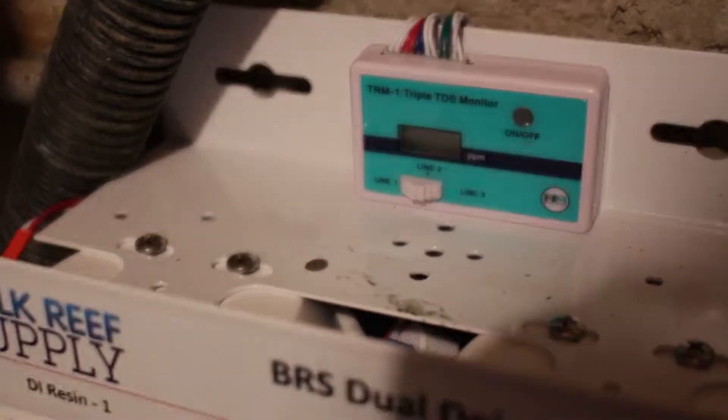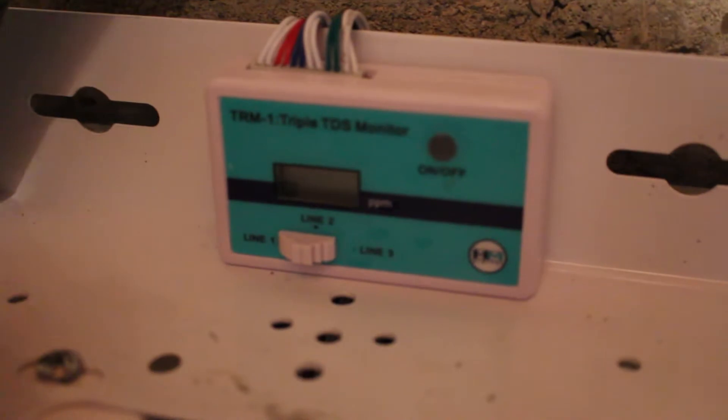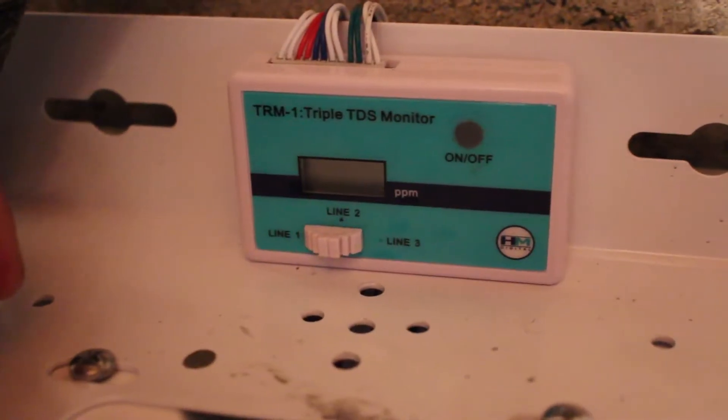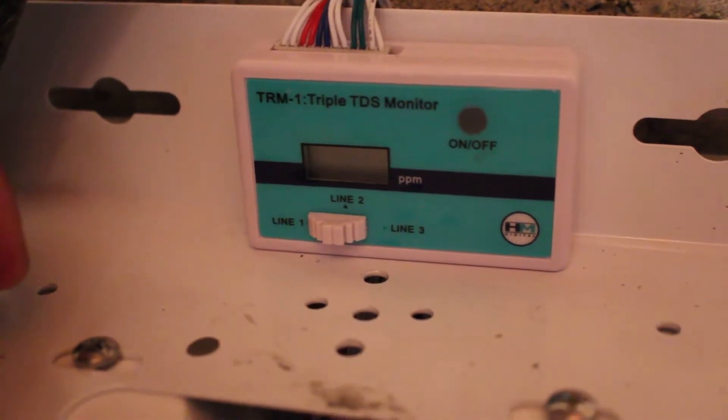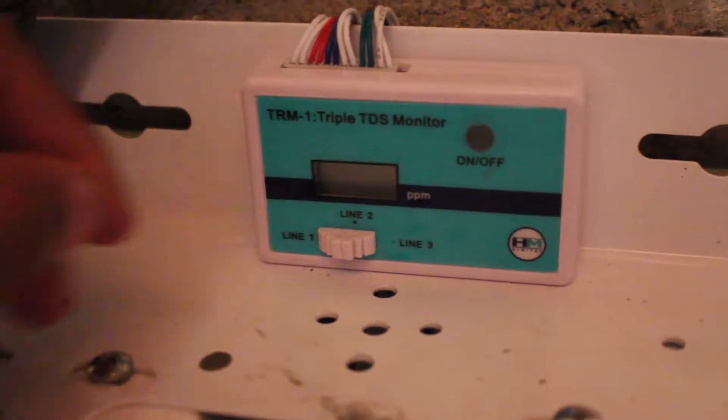And this monitor right here measures the total dissolved solids that's in the water. So you want line 3 reading 0. That means the water is good clean.